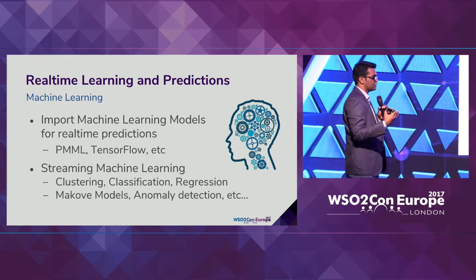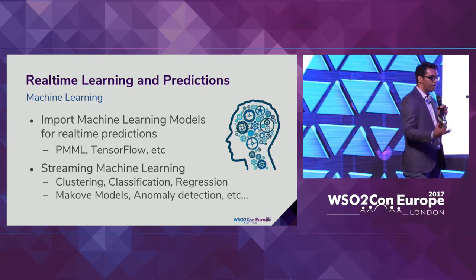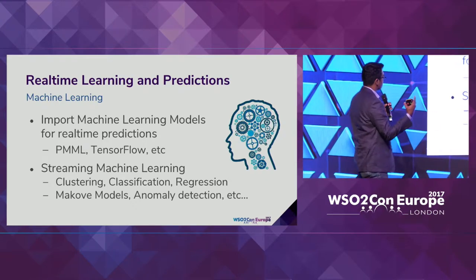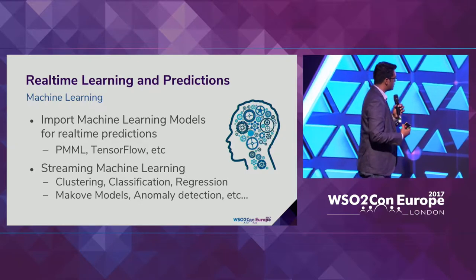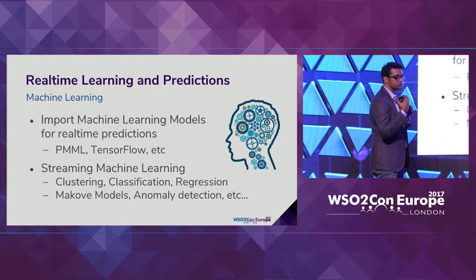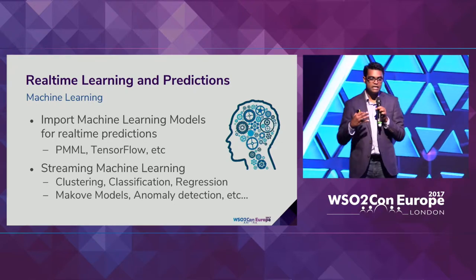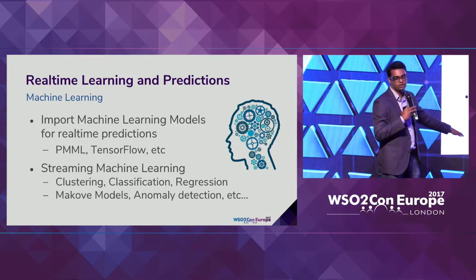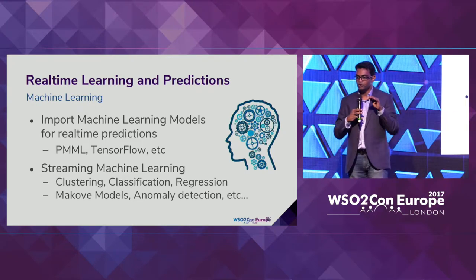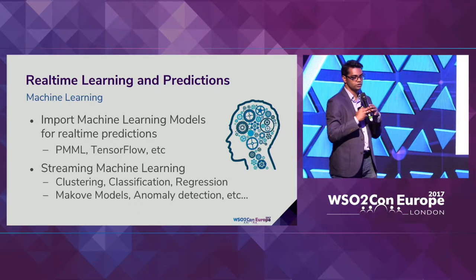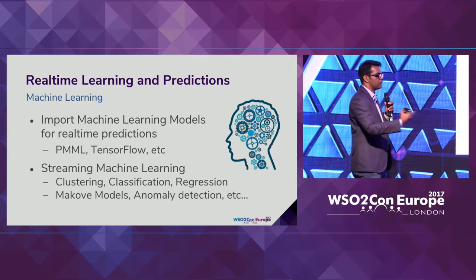We have support for both static and streaming machine learning models. We support PMML, TensorFlow, and Spark machine learning for static models. We are also researching and implementing many in-memory algorithms for clustering, classification, regression, Markov models, and anomaly detection for streaming machine learning. With streaming ML, you don't need to collect data, train a model, and then use it separately — the system itself learns and predicts continuously.